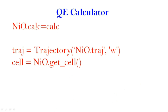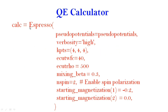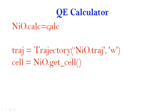Next I will assign a calculator to my object 'nio'. This is my Espresso calculator and I will assign it to the nio object. To trace the trajectory of all atoms in nio I will use Trajectory, and in the 'cell' variable I will get the cell parameter of my nio object.